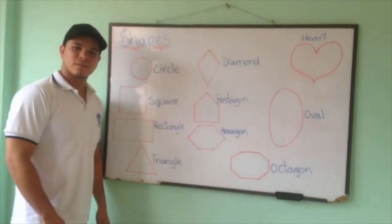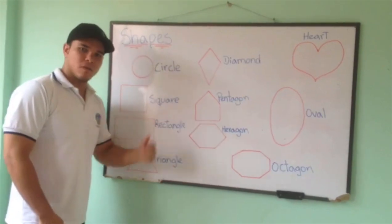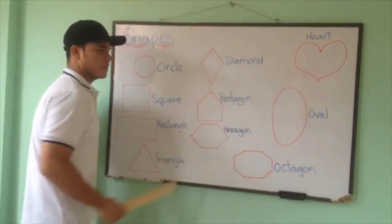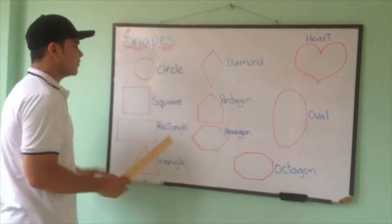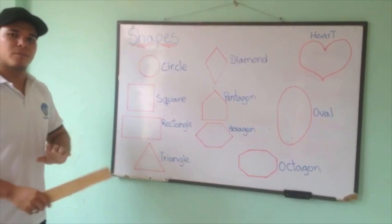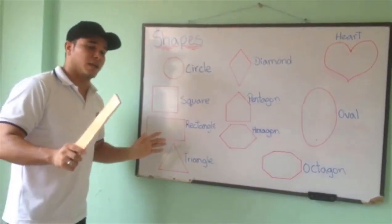Oval. The oval is really close to the circle, but it's not the same. Remember.